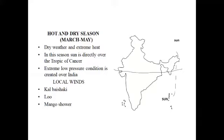During summer, always remember that temperature and pressure are inversely related — when temperature increases, pressure decreases, and when temperature decreases, pressure increases. During the summer season, the land surface experiences high temperature, which is why the pressure in the northern part of India becomes very low.